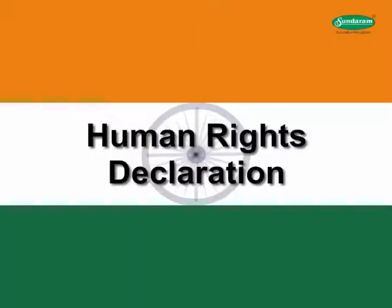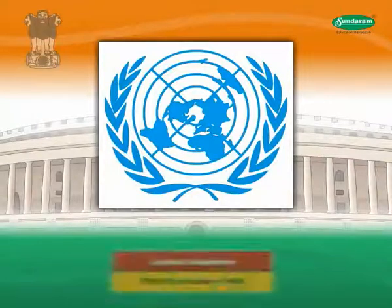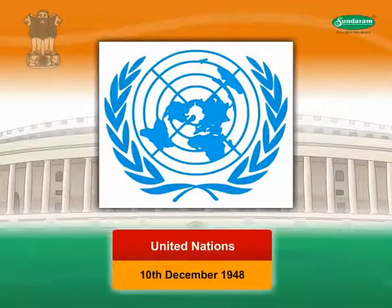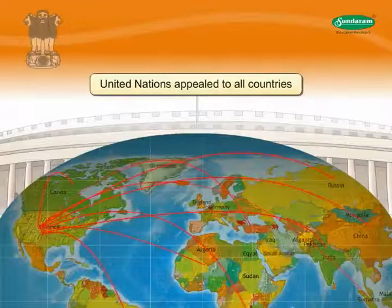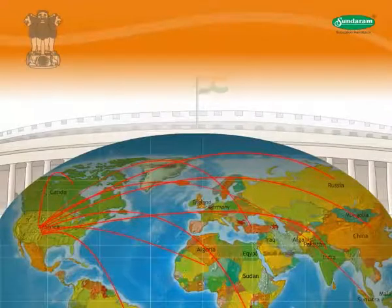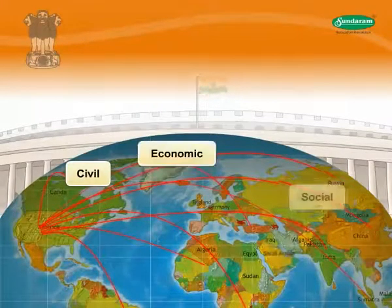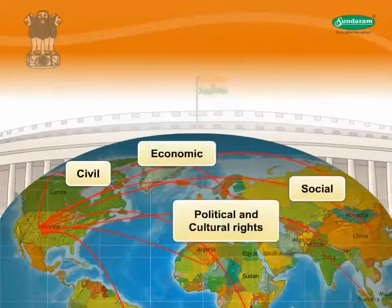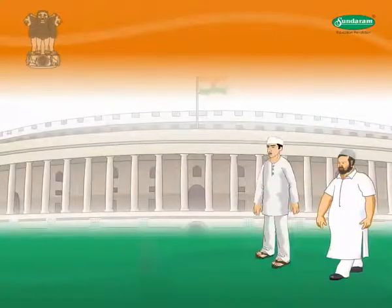Human Rights Declaration. The United Nations adopted and accepted the Universal Declaration of Human Rights on 10th December 1948. The United Nations appealed to all countries to accept and adopt this Universal Declaration, which is intended to ensure civil, economic, social, political, and cultural rights for the welfare of entire human civilization.